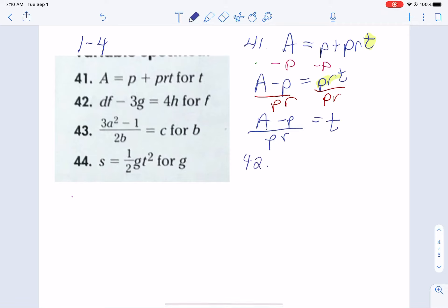Let's take a look at 42. For 42, we want to solve it for F. So again, treat every other variable if it was a number.